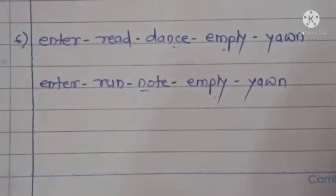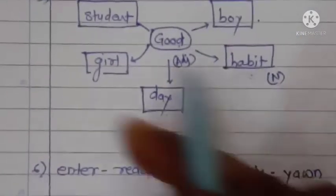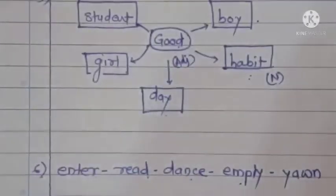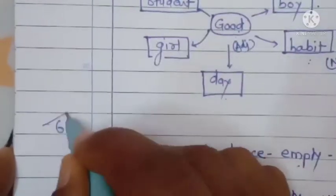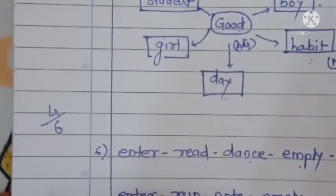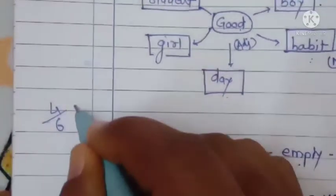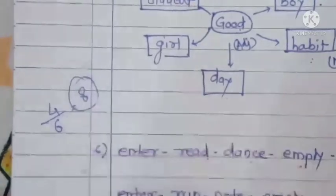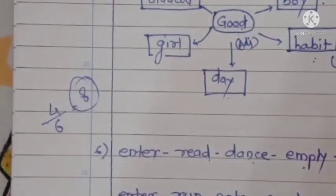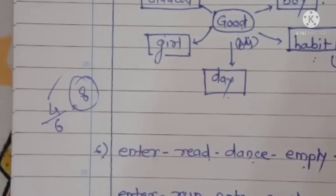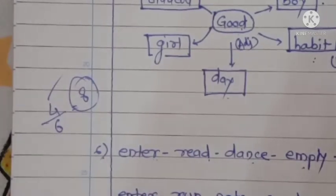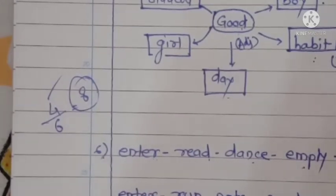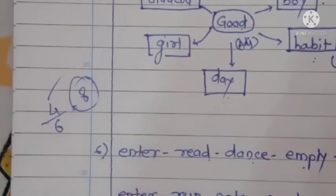So friends, we have completed all six activities, but you only need to attempt any four of them for 8 marks. So decide which four activities you want to attempt. It's best if you've reviewed all six, and in this way the first section ends here.